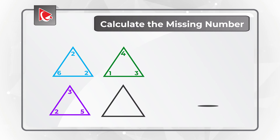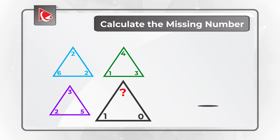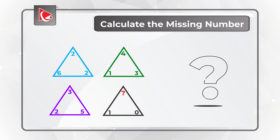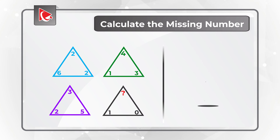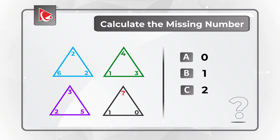And then the last triangle, the black triangle, has numbers 0, 1, and then in the upper corner there is a missing number, which you need to calculate based on four different choices: choice A – 0, choice B – 1, choice C – 2, and choice D – 3.